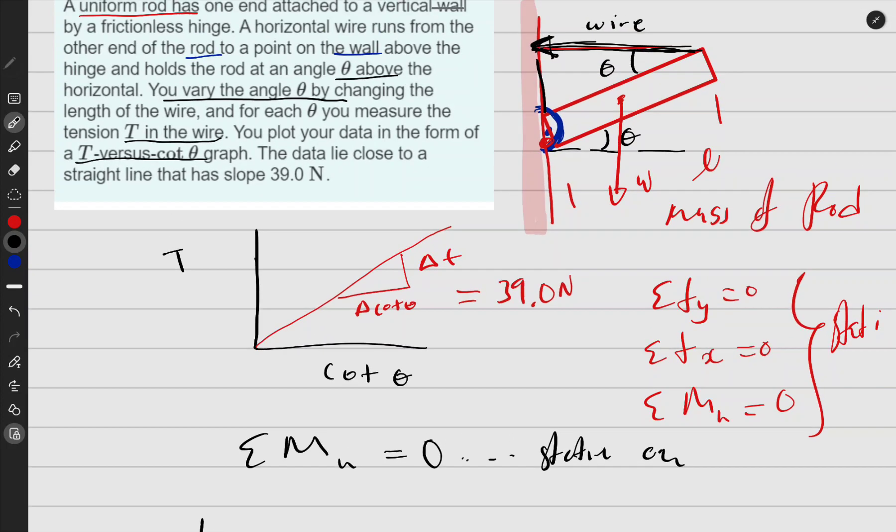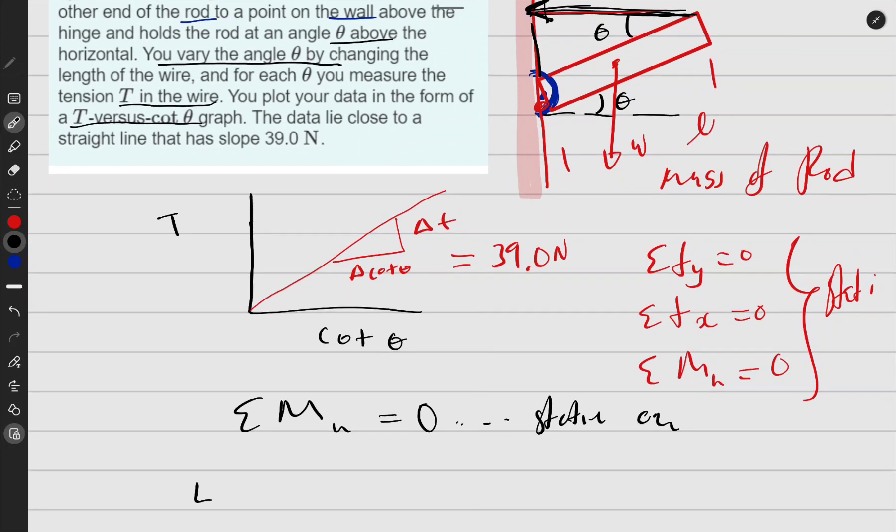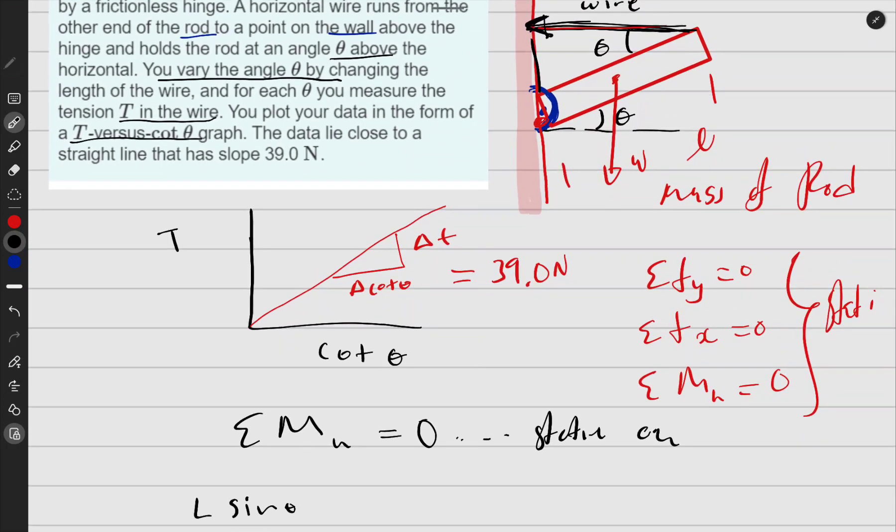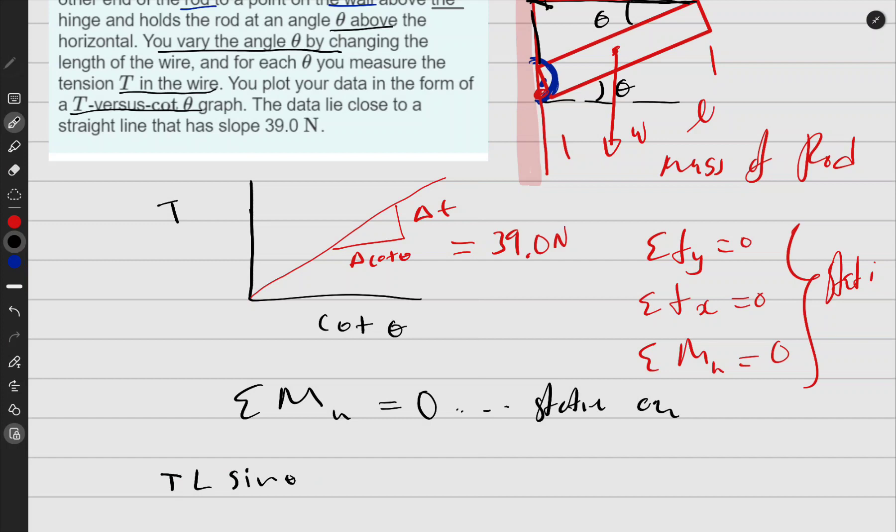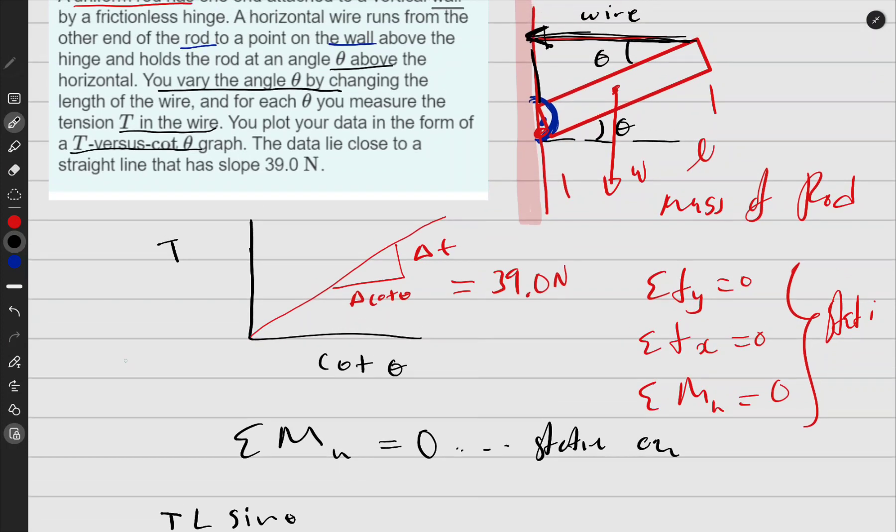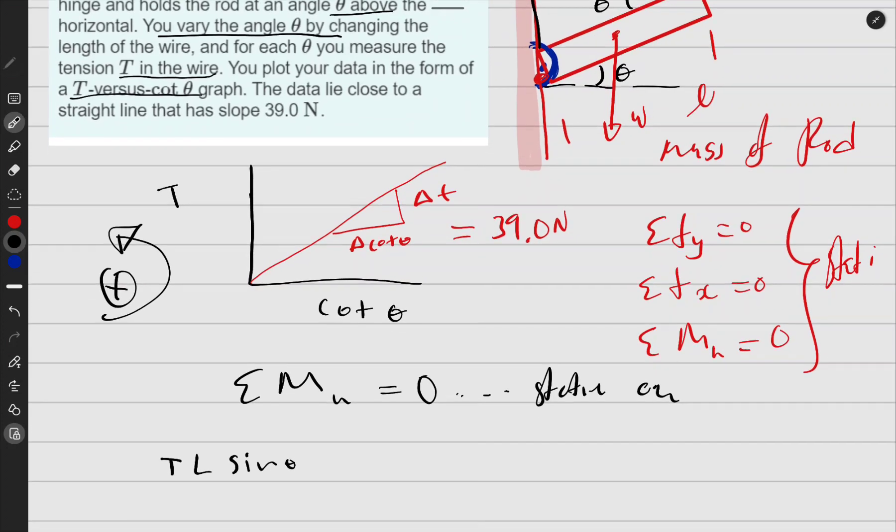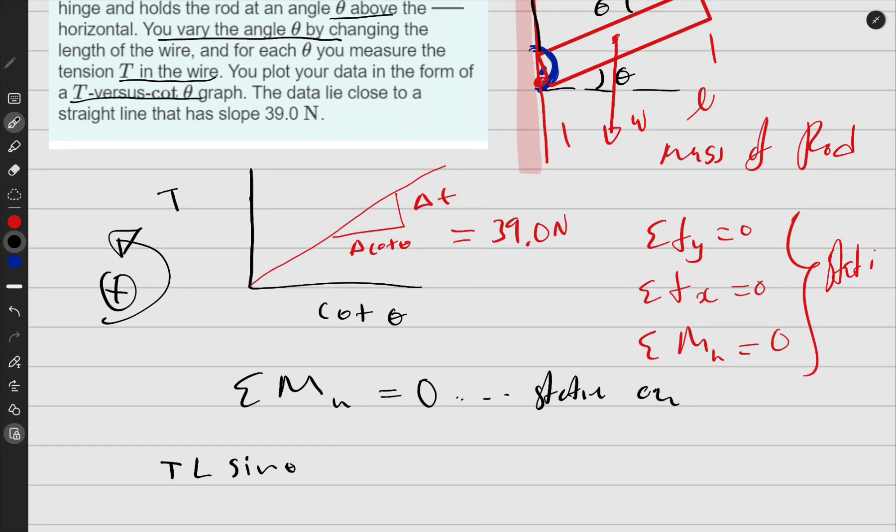So the distance perpendicular to this is going to be the length, okay? This is going to be length, and this is opposite—it's going to be sine theta, and the force is tension. Okay, it's causing a moment like this, and I call this positive.